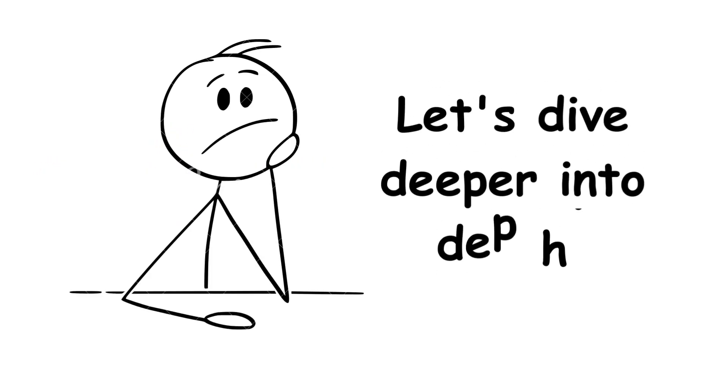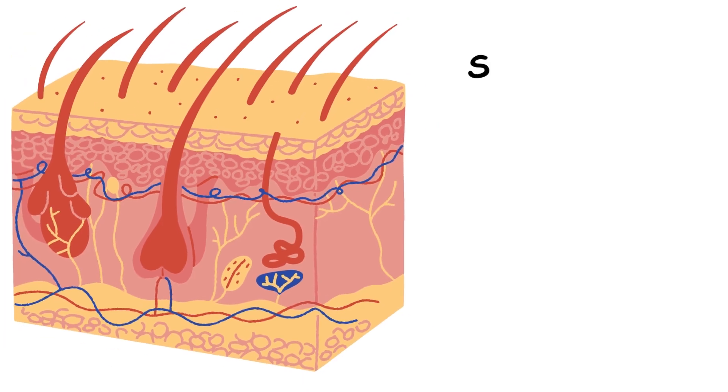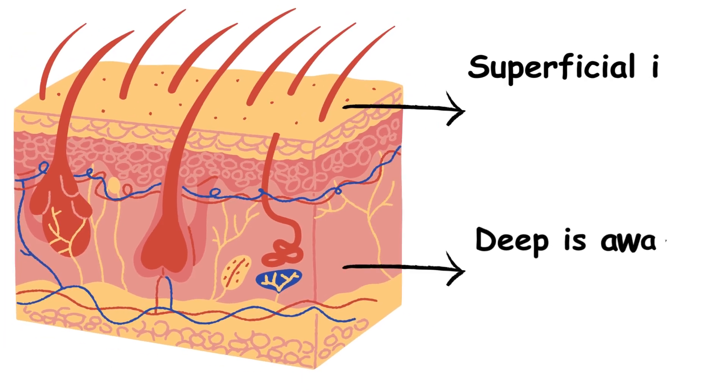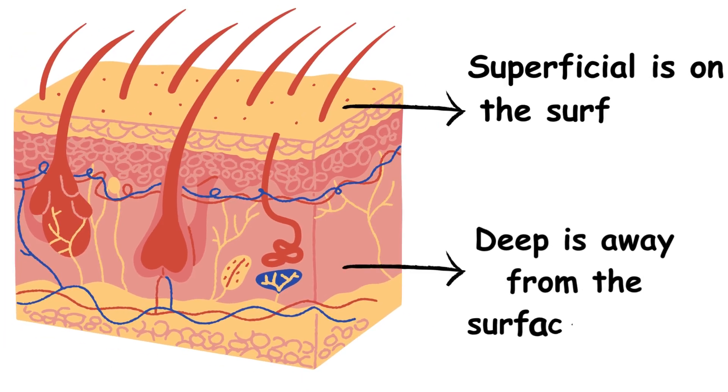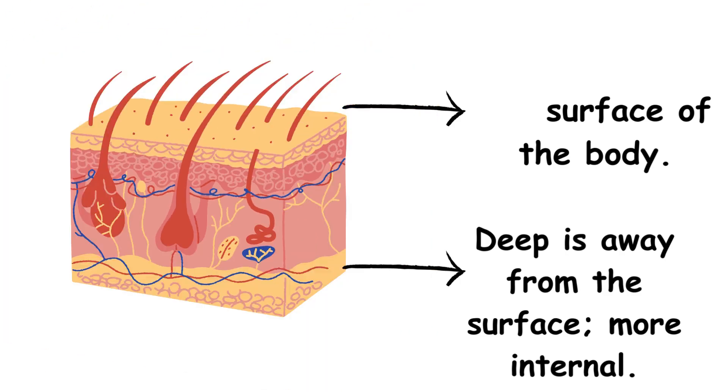Let's dive deeper into depth. Superficial means toward or on the surface of the body. Deep means away from the surface — more internal.